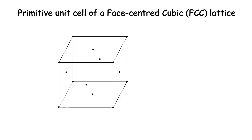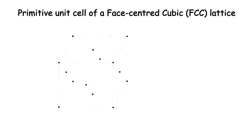Let us consider a face-centered cubic lattice. The conventional unit cell of this lattice is shown here. It is a cube with lattice points at the corners and at the centers of all faces. But note that when we say FCC lattice, we mean the points generated by the repetition of this unit cell and not the unit cell itself.